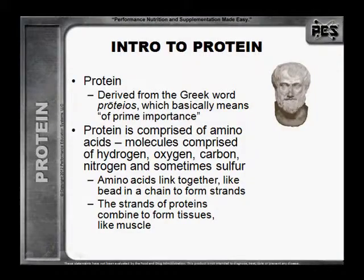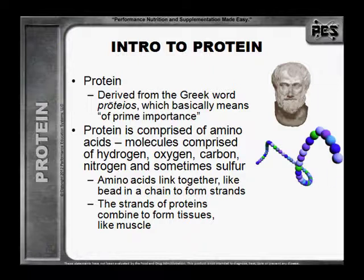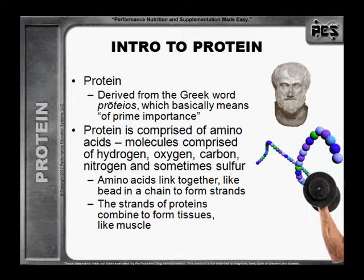Protein is derived from a Greek word that basically means of prime importance. Protein is comprised of amino acids, which are molecules of hydrogen, oxygen, carbon, nitrogen, and sometimes sulfur. Amino acids link together like beads in a chain to form strands, and the strands of protein combine to form tissues, like muscle.